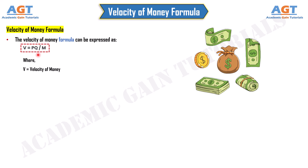Where V represents velocity of money, PQ represents the GDP — nominal gross domestic product — and M represents money supply. This completes the topic on velocity of money formula, which is one of the indicators for determining the economic health of a nation, along with GDP.